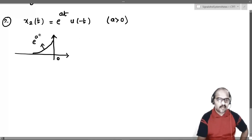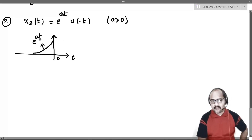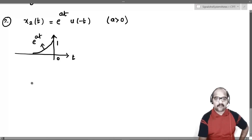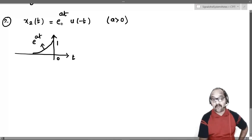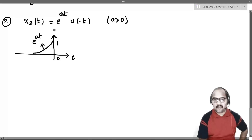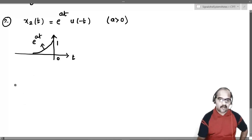The equation of this curve is e^(at). If a is positive, in the negative t direction it will decrease, and in the positive direction it will increase up to 0. So x2(t) is defined like this and is absolutely integrable when a > 0. But if a is less than 0, the signal is not absolutely integrable, and hence the Fourier transform of x2(t) does not exist.